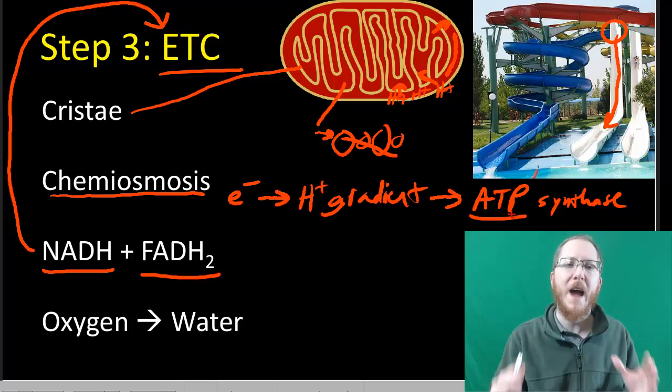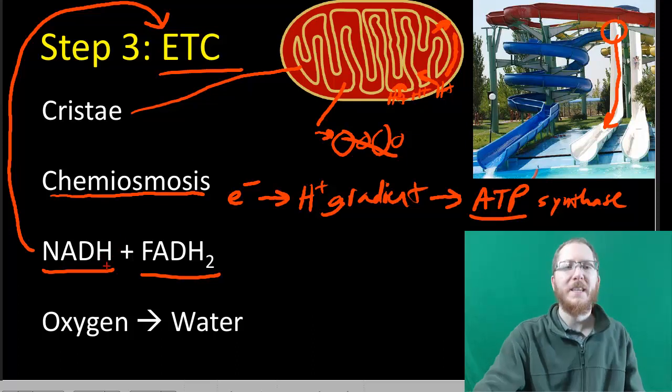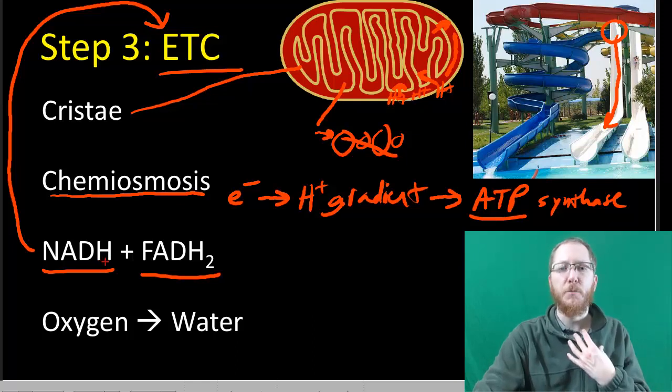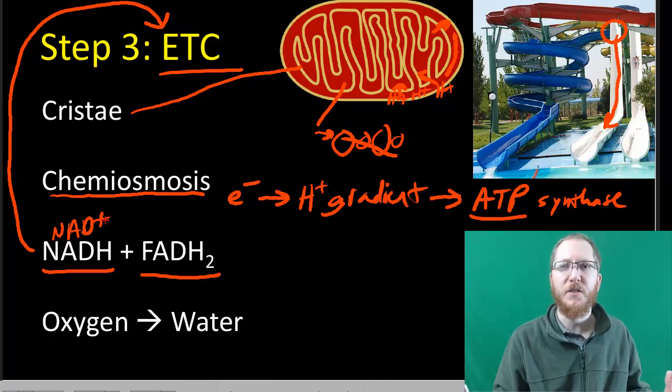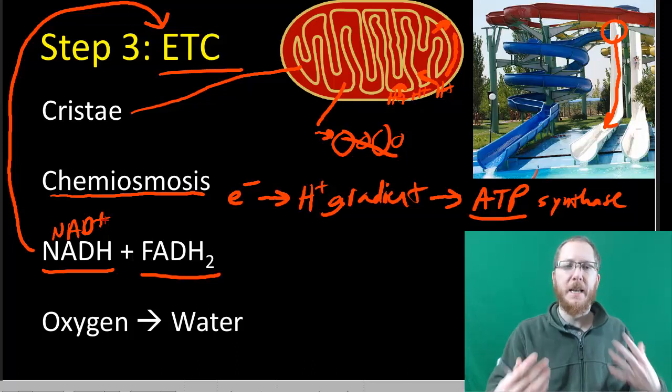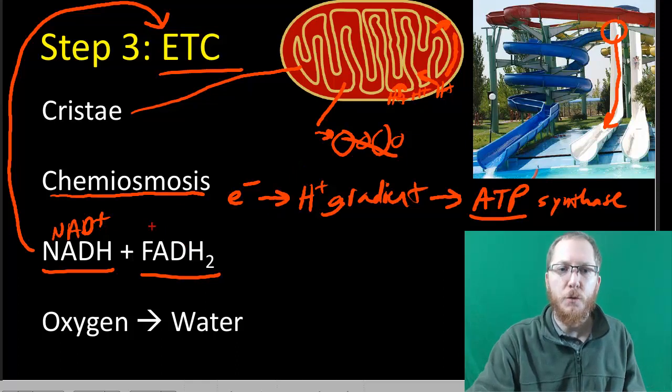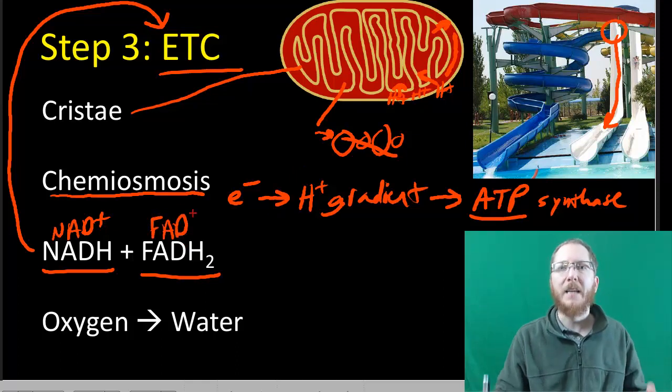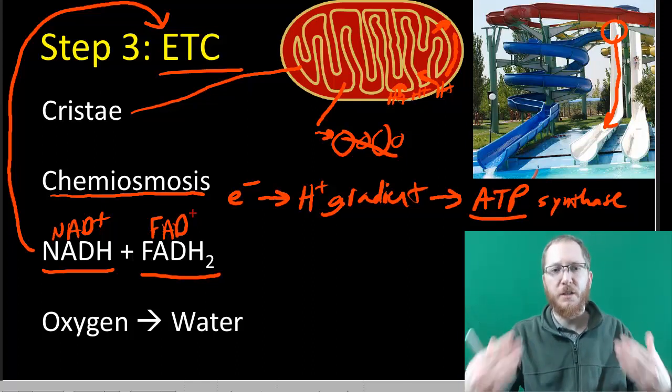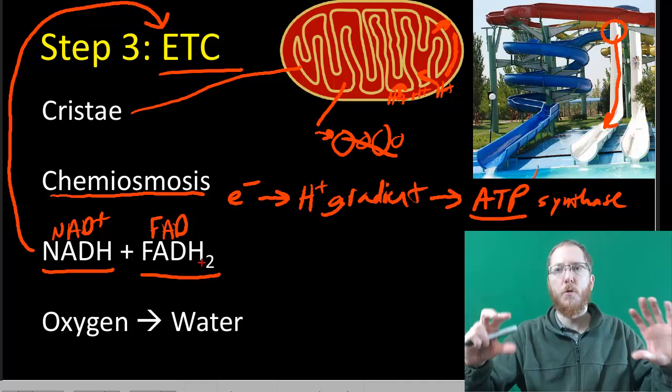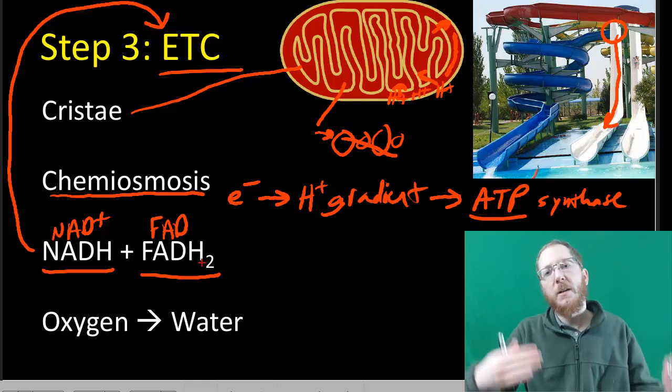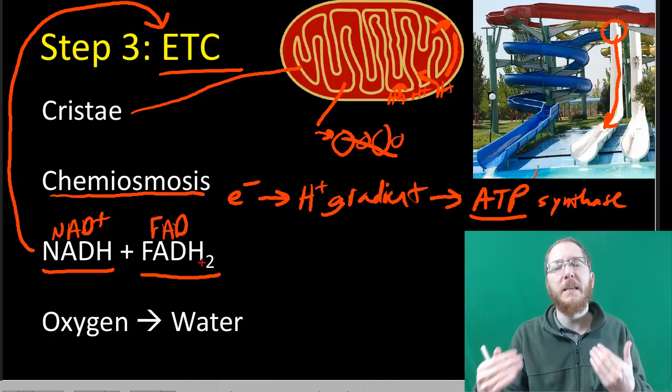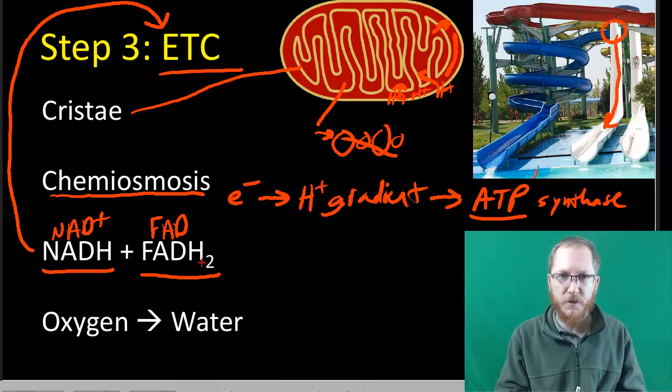The ETC is all about extracting the energy. Once you use these guys up, once I take the energy from NADH, I have removed its electrons and an H+. NADH now becomes NAD+ and goes back to the Krebs cycle or glycolysis to get recharged. FADH2 becomes FAD and the cycle continues. The whole process is called chemiosmosis, and the physical structure we call the electron transport chain.